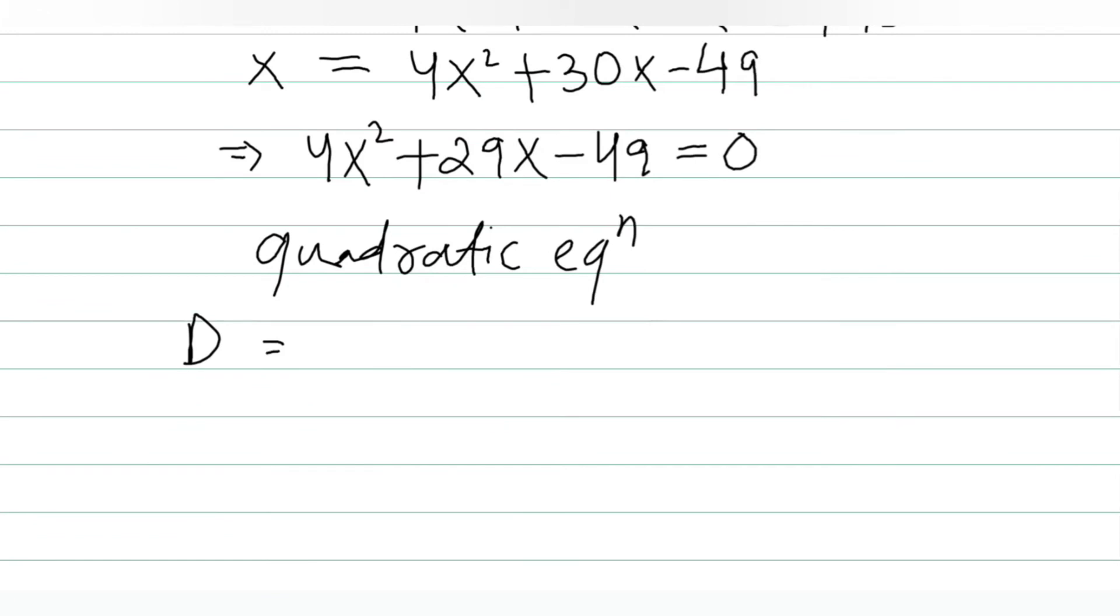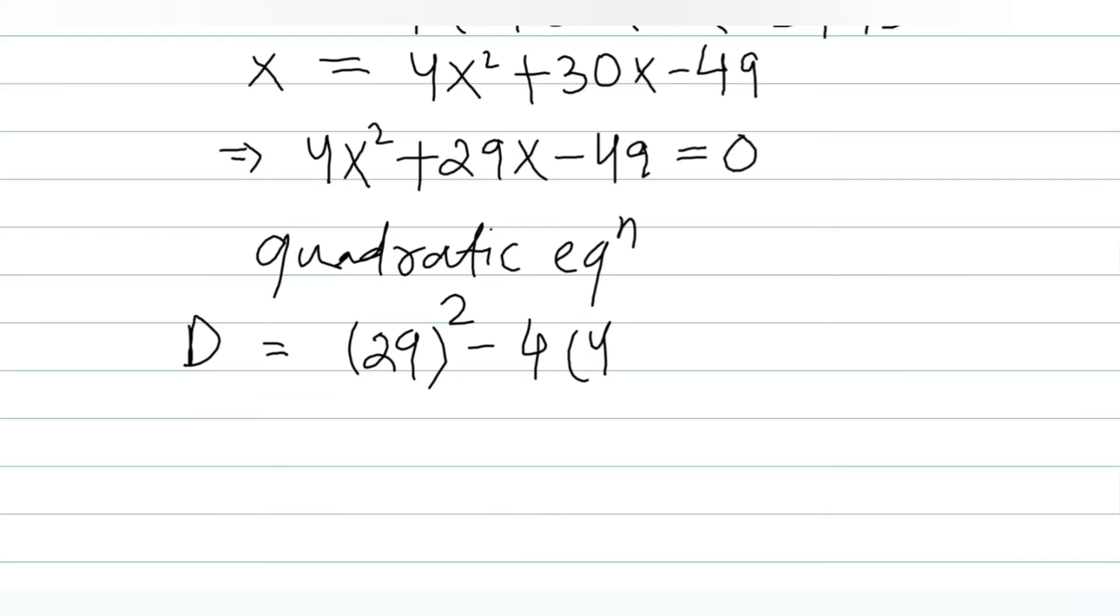D equals b² minus 4ac. This is 29 squared minus 4 times 4 times minus 49. And if you see here, D is 57, which is more than 0. So at most we can have two solutions.